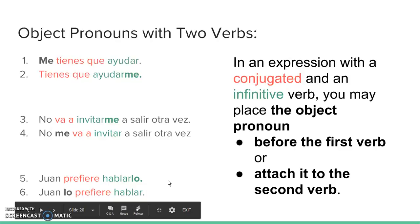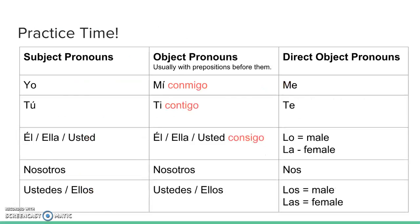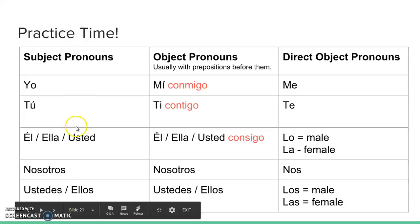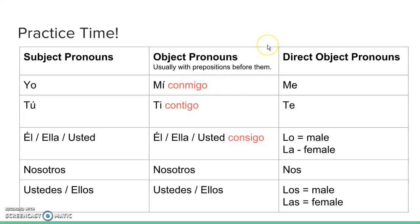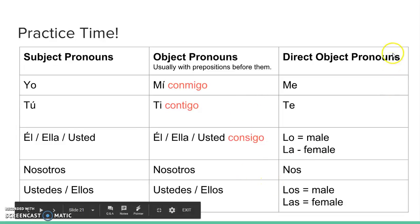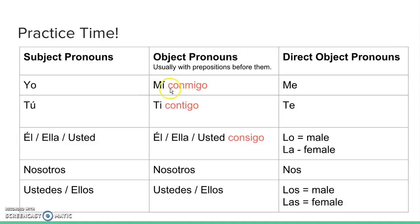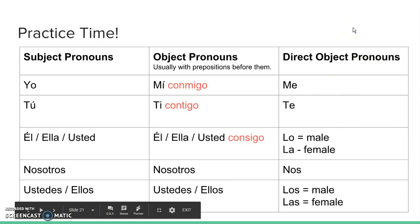Let's look at a visual representation of what we've talked about. You already know subject pronouns — you're very familiar with them and have used them a lot for conjugation. Then we have object pronouns, which we talked about in the previous lecture — 'me,' 'te,' and so on. One common question is: what's the difference between 'me' and 'mí,' and 'te' and 'ti'? We'll be using these for the upcoming lecture and exercises.